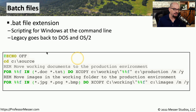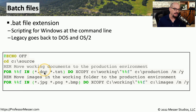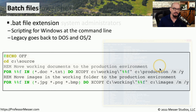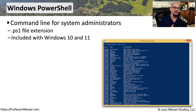For example, this is a batch file that runs at a Windows command prompt and moves working documents to a production environment. It looks for anything that is a .doc or .txt file, and performs an xcopy from that working environment to a production folder. Although a batch file provides us with a lot of flexibility at the command line, there are still features within Windows that aren't available from a batch file.